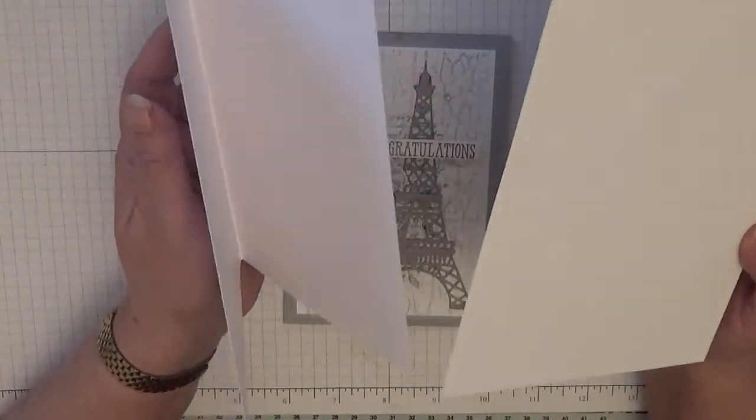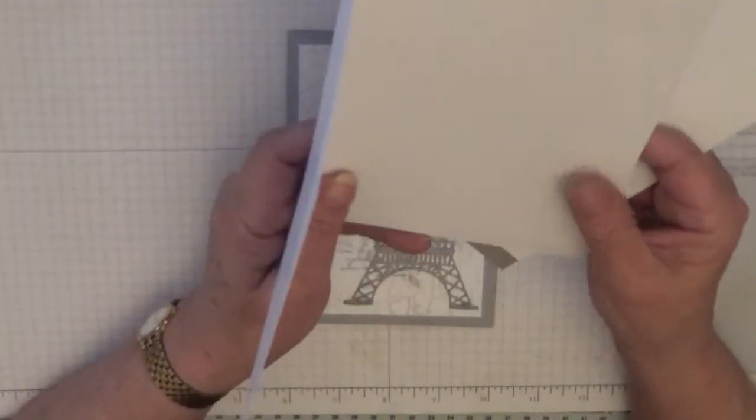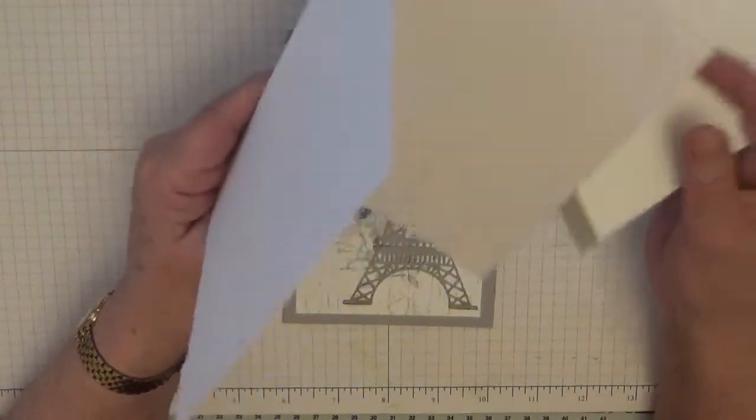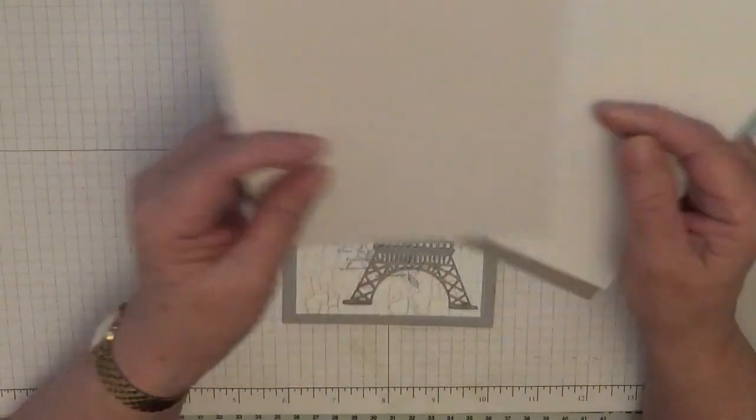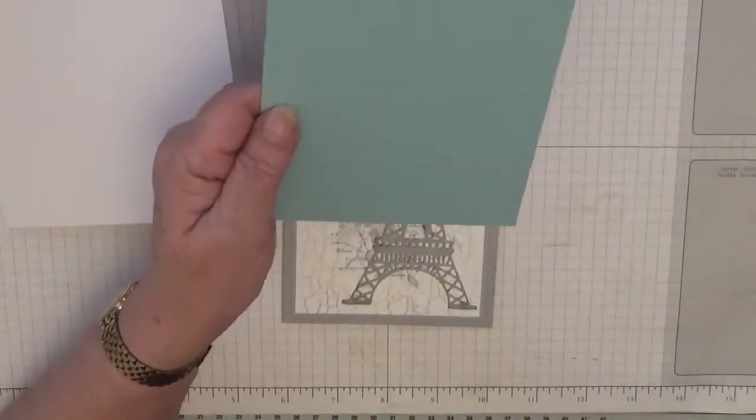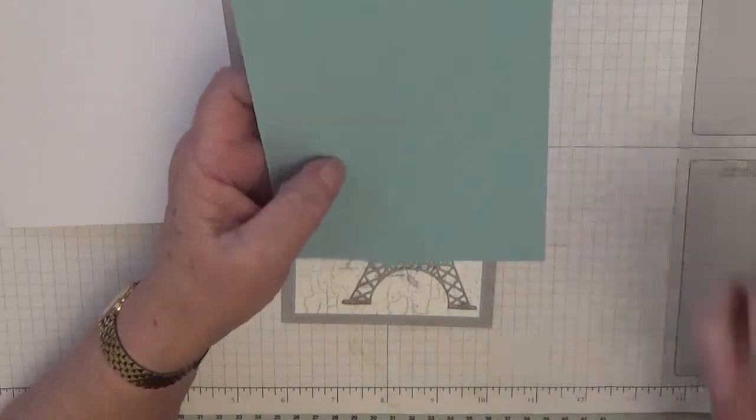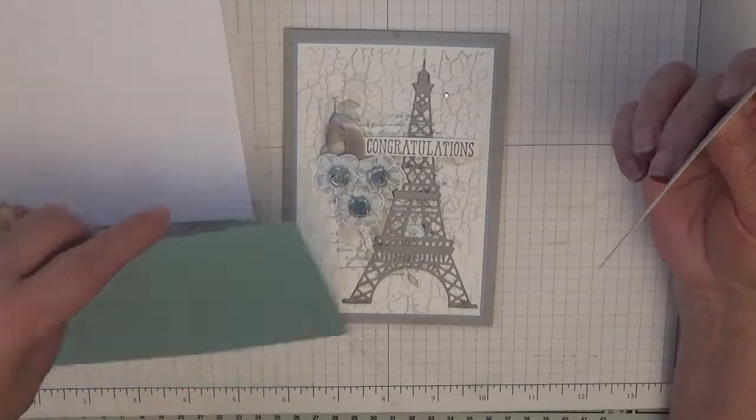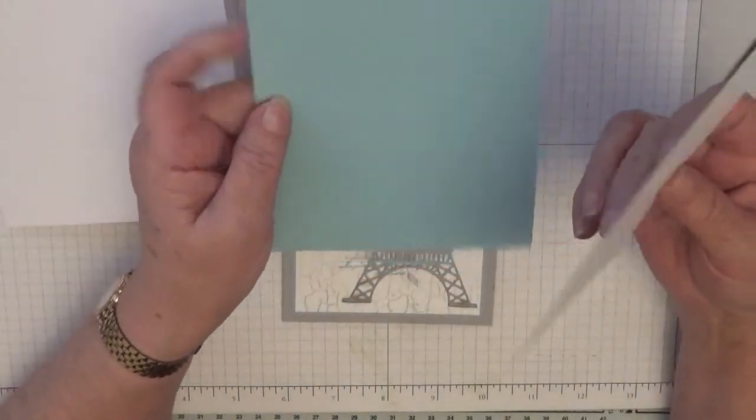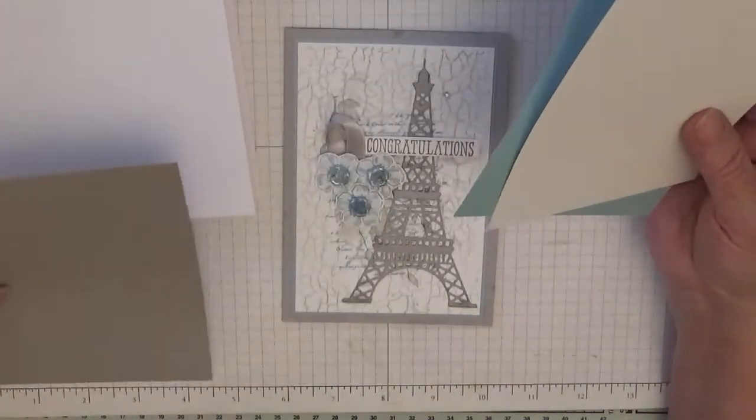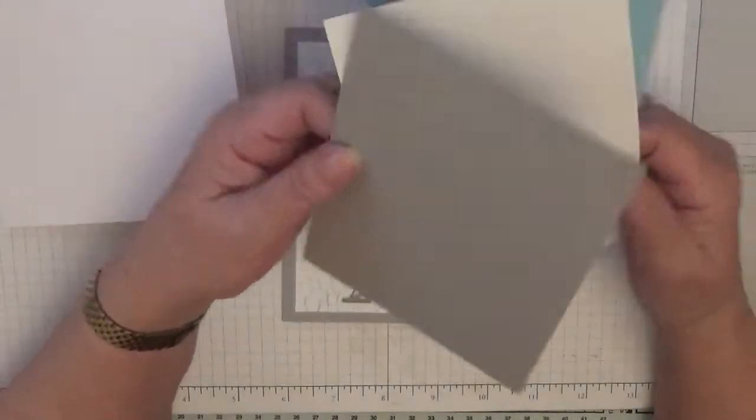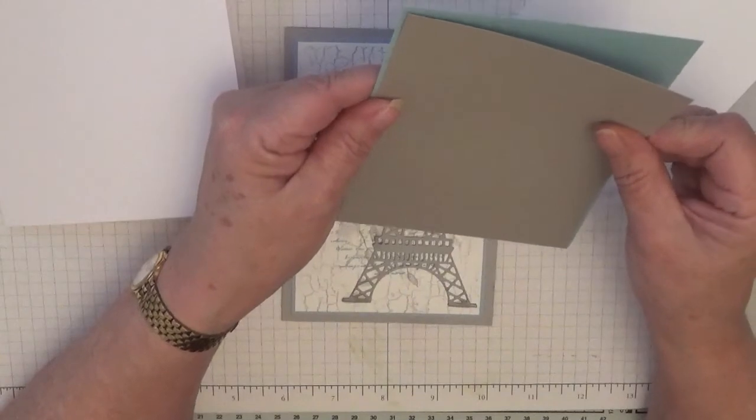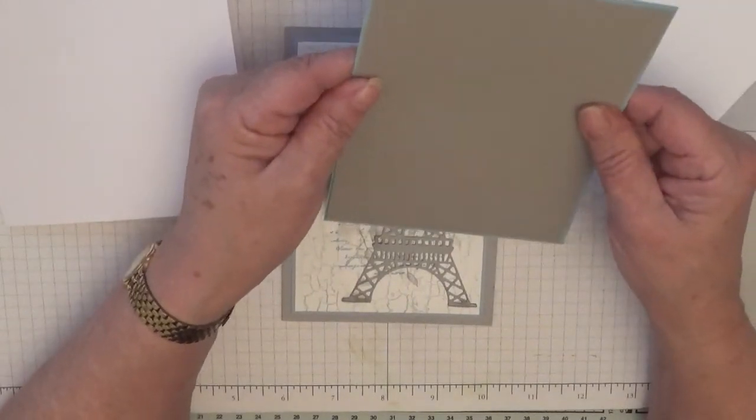I also have a piece of white cardstock at six and three quarters by four and three quarters for the inside. For the outside I have a piece of balmy blue six and a half by four and a half. I have a piece of granite gray at four and a quarter by six and a quarter.